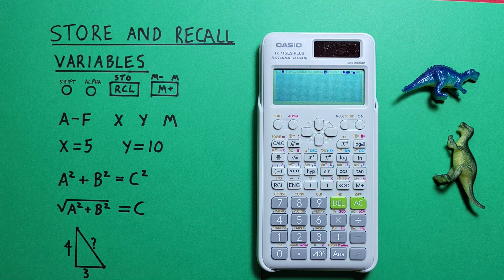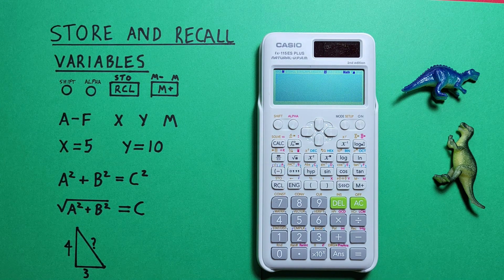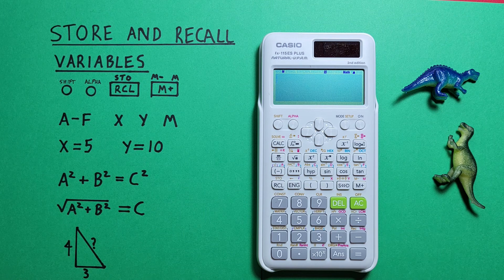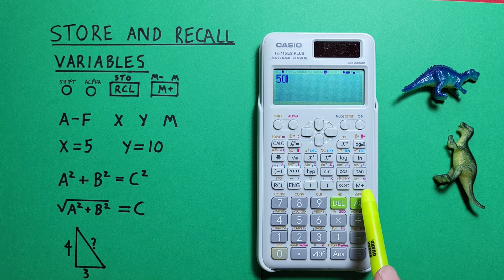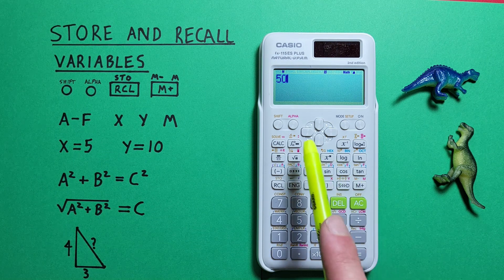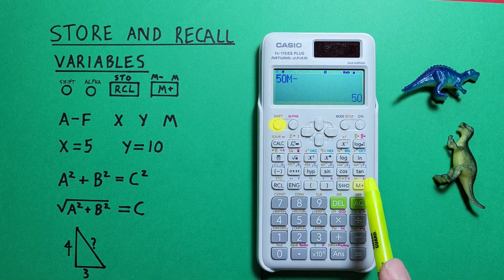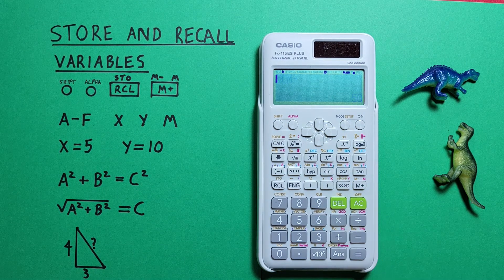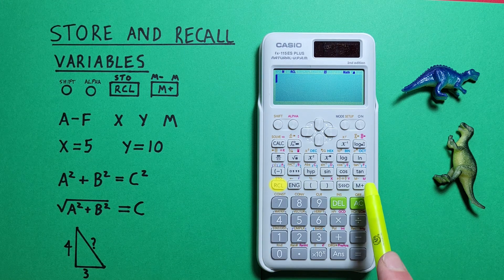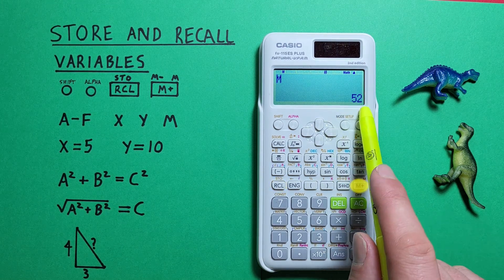We can also subtract from our m or independent memory the same way. If we want to subtract 50 from it, we can press 50 and then use the shift function of the m plus, which is m minus. So shift, m minus. There we go. And now if we recall our m value, we see it's 52.